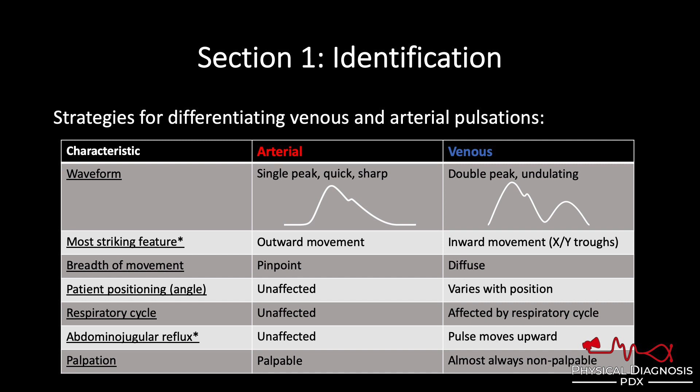The breadth of movement can also be helpful. The arterial pulse tends to be pinpoint, involving a small area of the neck, whereas the venous pulse is diffuse, involving a larger area of the neck.